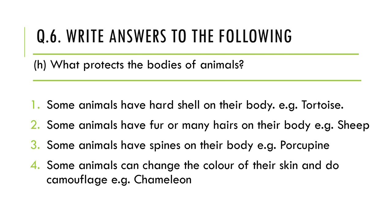Fourth, some animals can change the color of their skin and do camouflage. Camouflage is to adjust with the environment — for example, the chameleon can turn green when among green trees so that it is not easily visible. So camouflage is also a form of body protection.